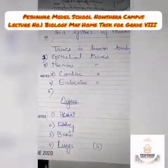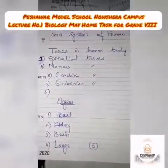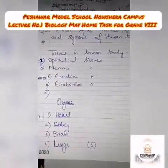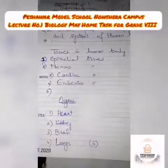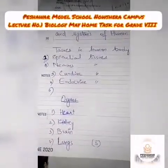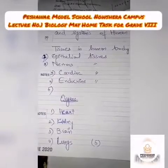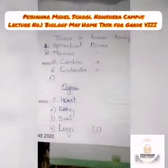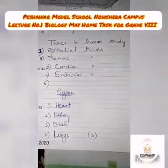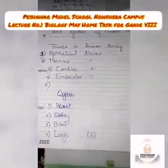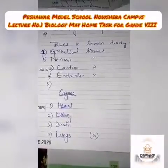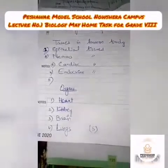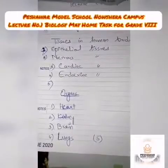Some of these tissues are: epithelial tissues, which are the outermost tissues of the body and form our skin; nervous tissue, which makes up the brain cells; cardiac tissue, which makes the heart; and endocrine tissues, which make up the hormone system. The fifth one I will leave for you — you will tell me which is the fifth one.